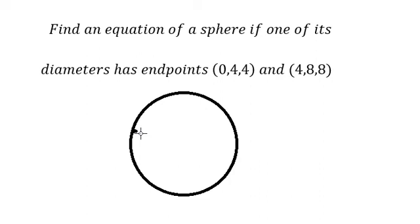We have the sphere, and we know that the points (0,4,4) and (4,8,8) are the endpoints of a diameter. So we want to find the center of this sphere. To do this, we can use the midpoint formula.